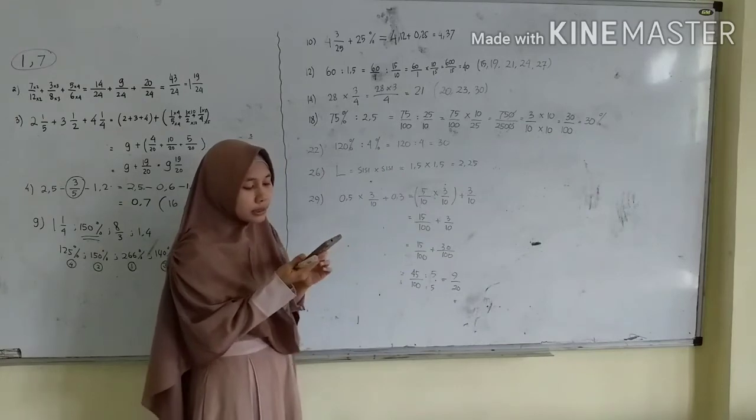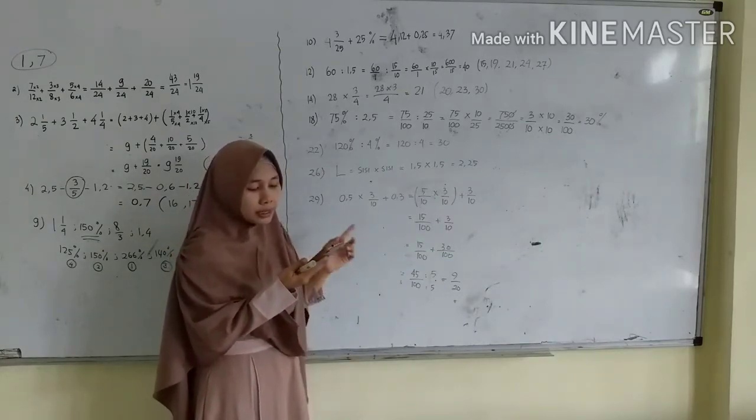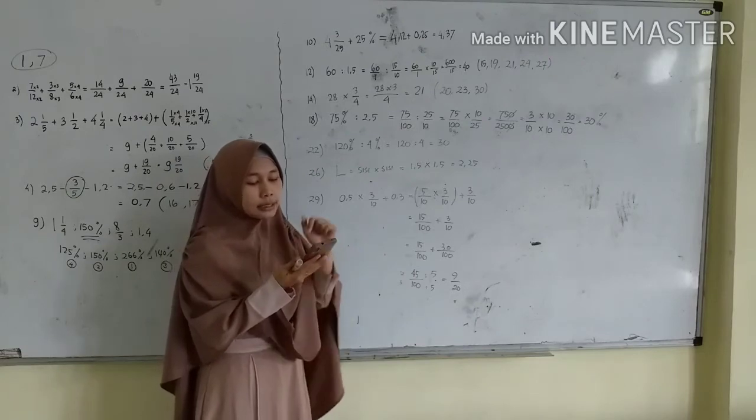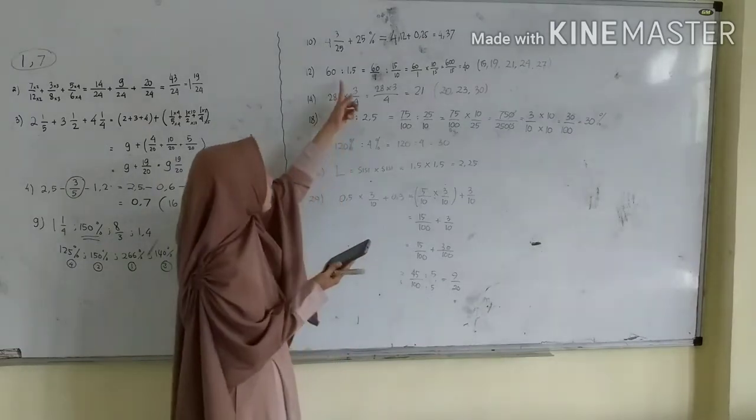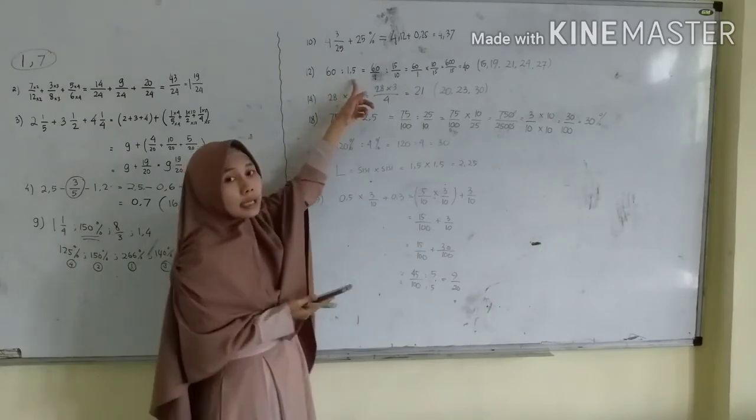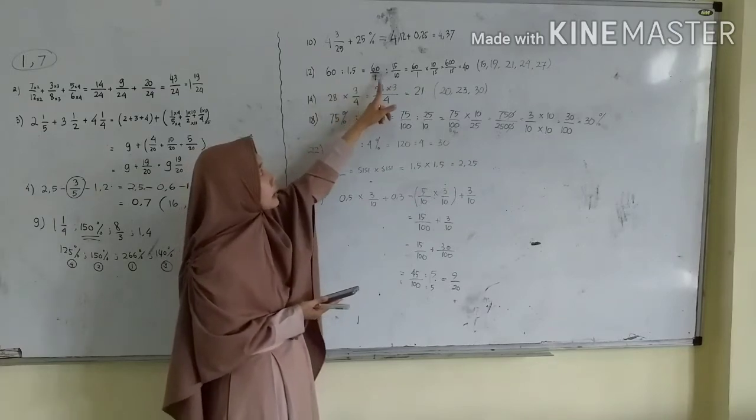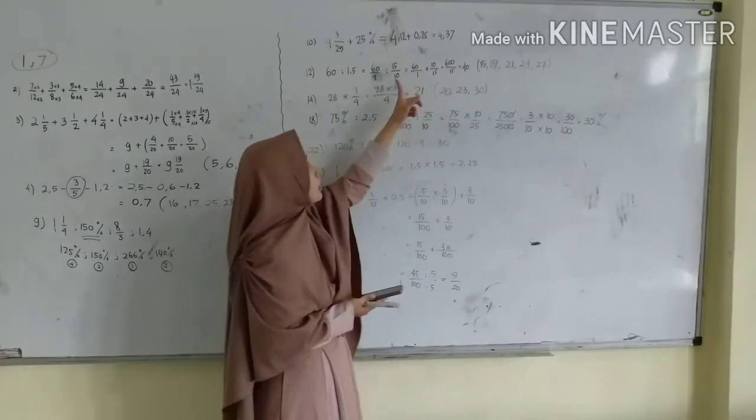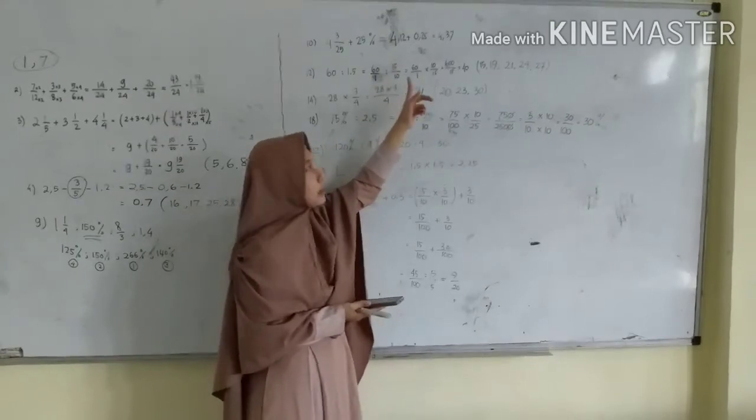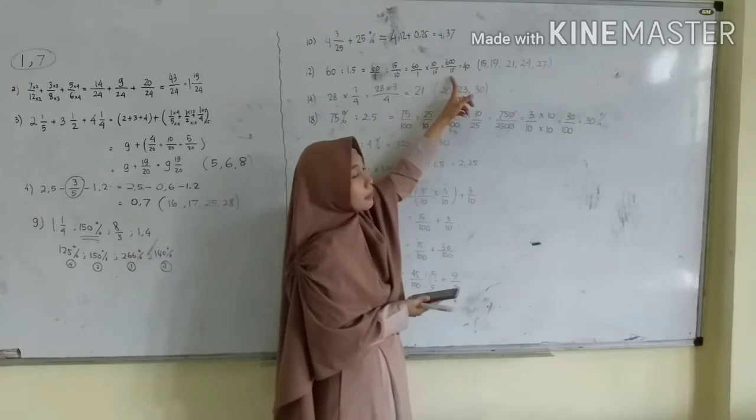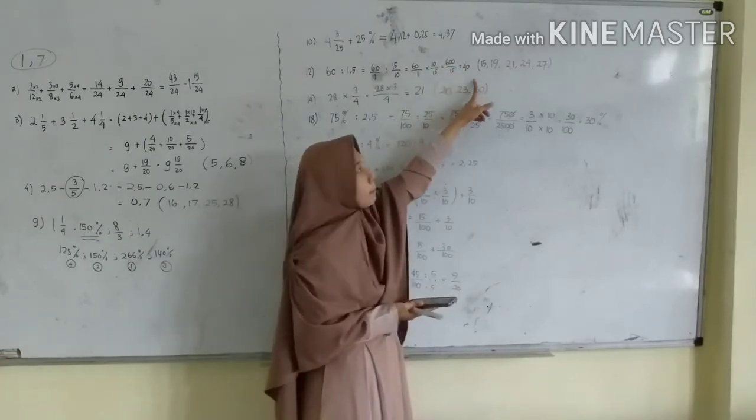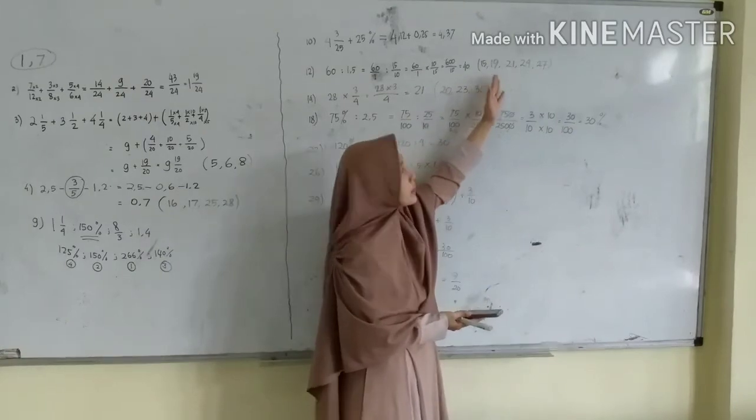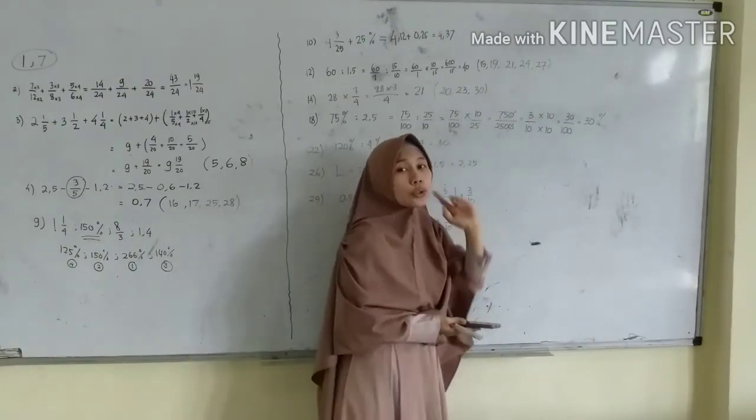Nomor 12, lanjut ya. Nomor 12 itu soal cerita. Pak Soleh membeli 60 kilogram daging sapi. Daging sapi tersebut akan dibagi menjadi 1,5 kilogram untuk dibagikan kepada tetangga yang mampu. Banyak tetangga yang akan mendapatkan daging sapi adalah? Disini ada kata kuncinya adalah dibagi. Berarti dibagi, 60 dibagi 1,5. Cara yang paling ya adalah dengan menjadikan ke pecahan. Pembagian pecahan ingat bisa dijadikan perkalian dengan syarat yang belakang dibalik ya. Kalau sudah dikalikan biasa 600 per 15 atau 600 dibagi 15 hasilnya 40. Nah nomor 12 ini caranya sama dengan nomor 15, 19, 21, 24, dan 27.